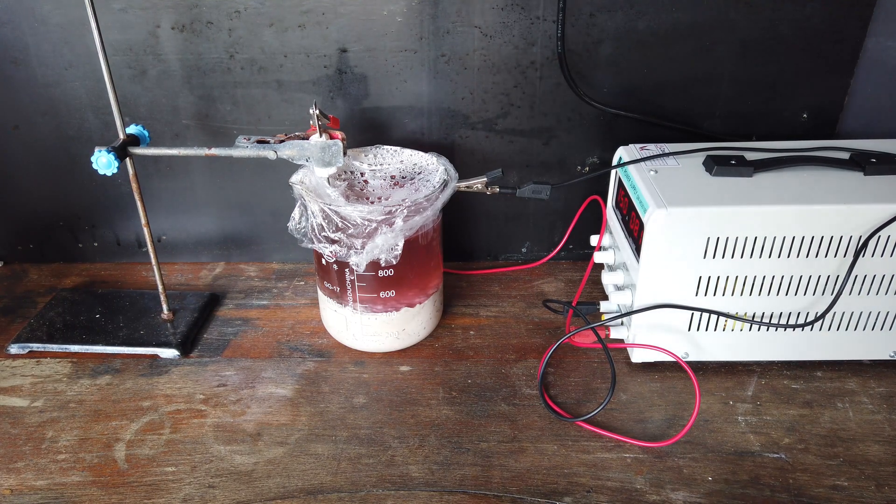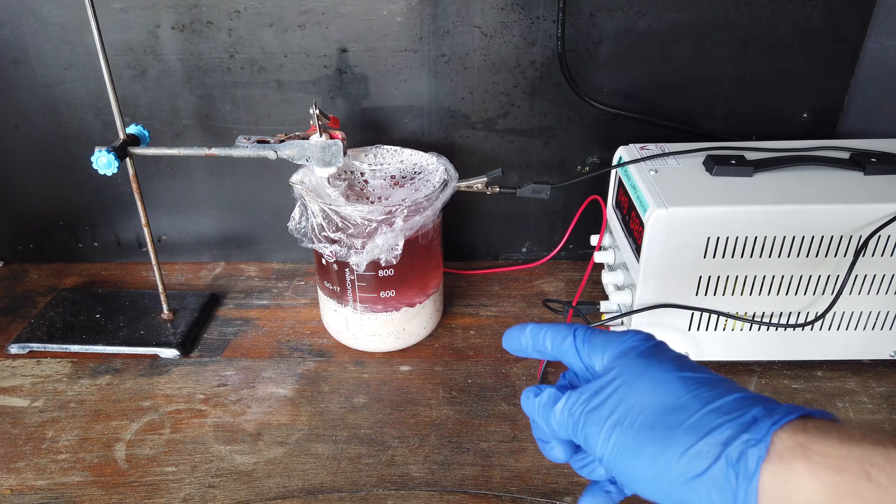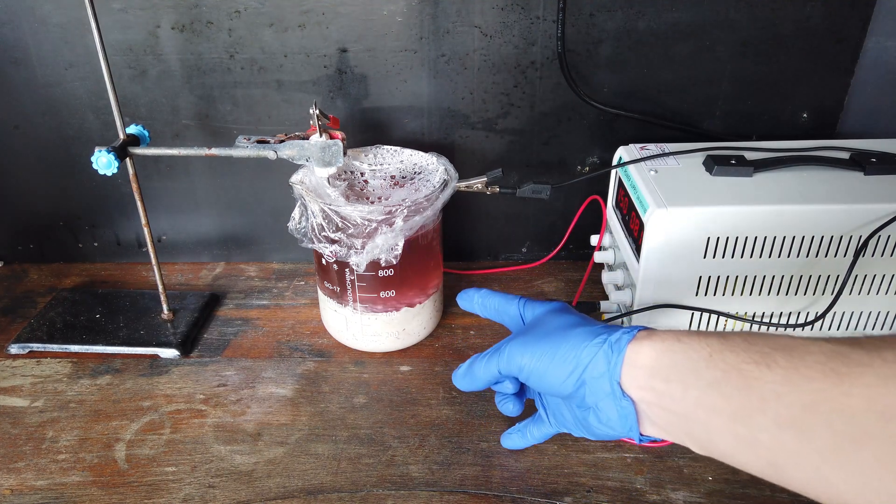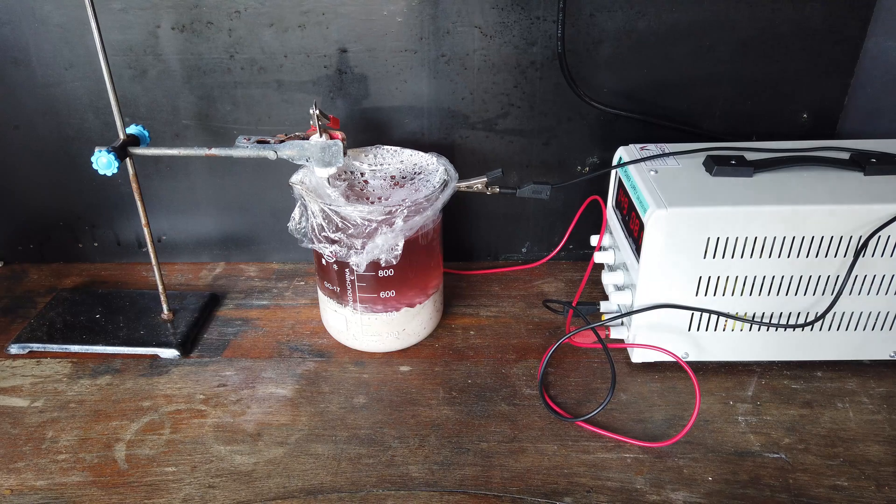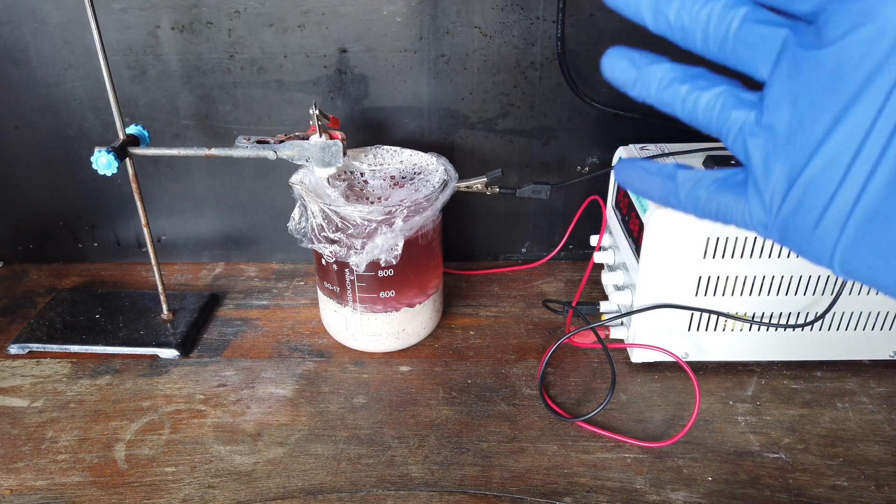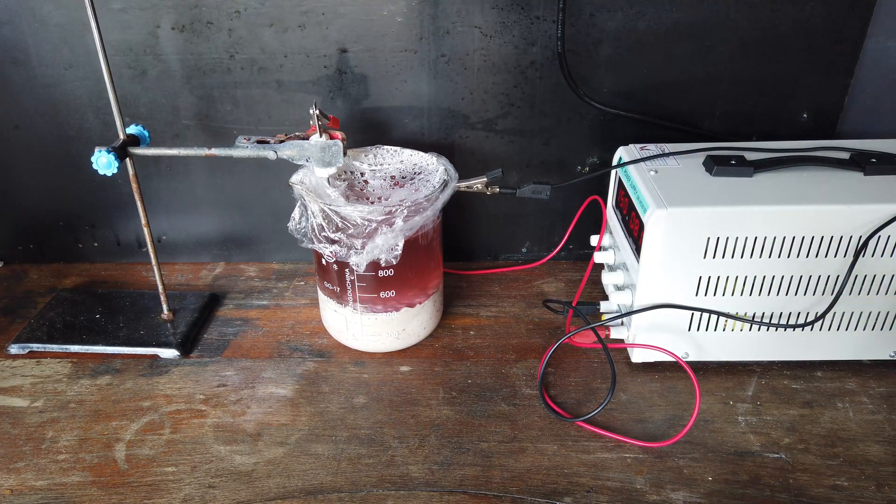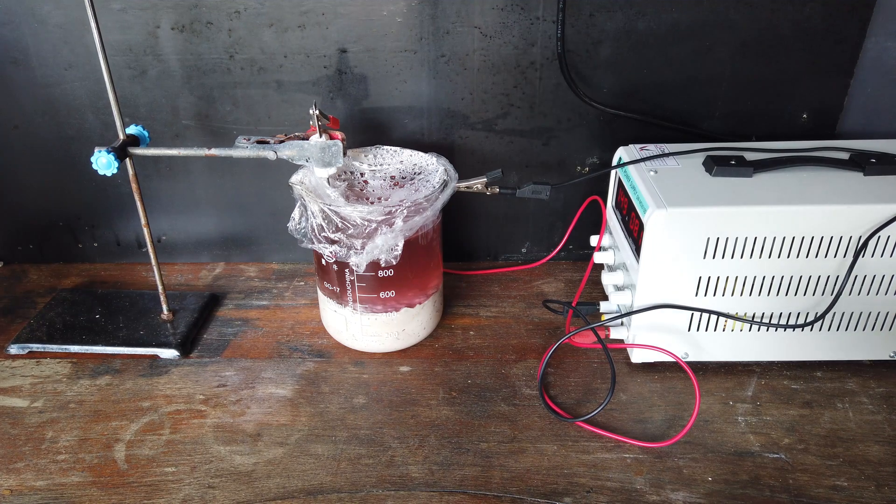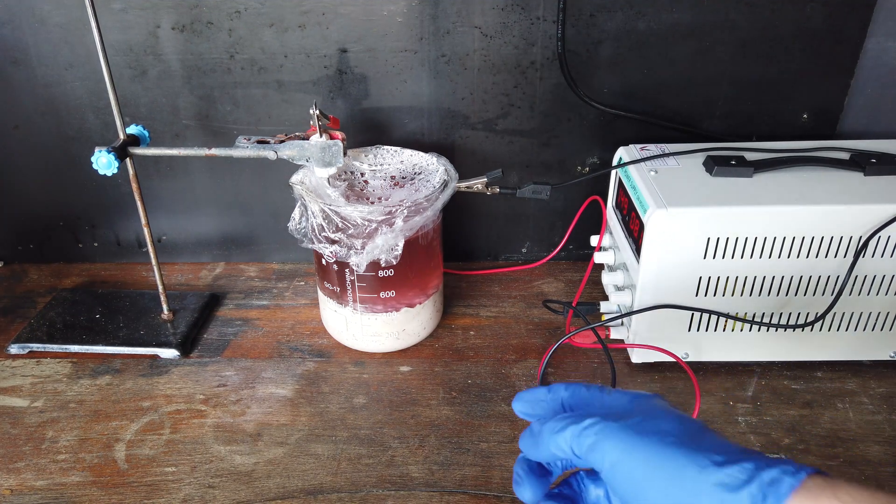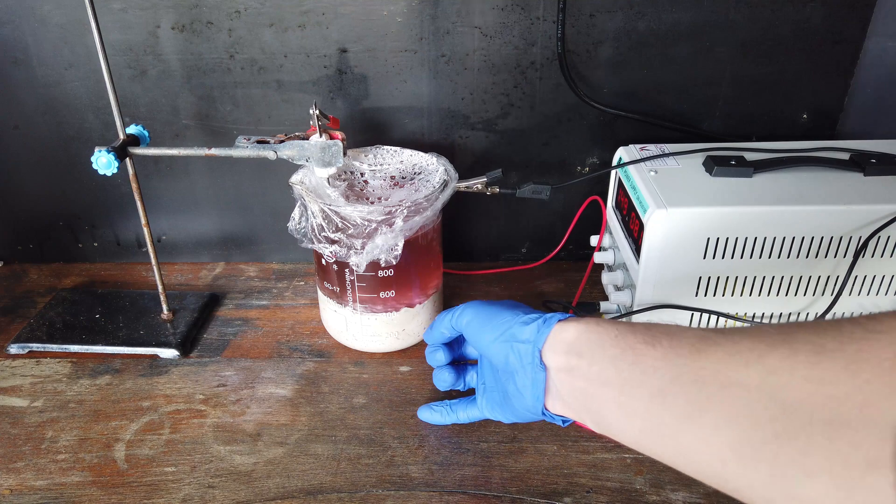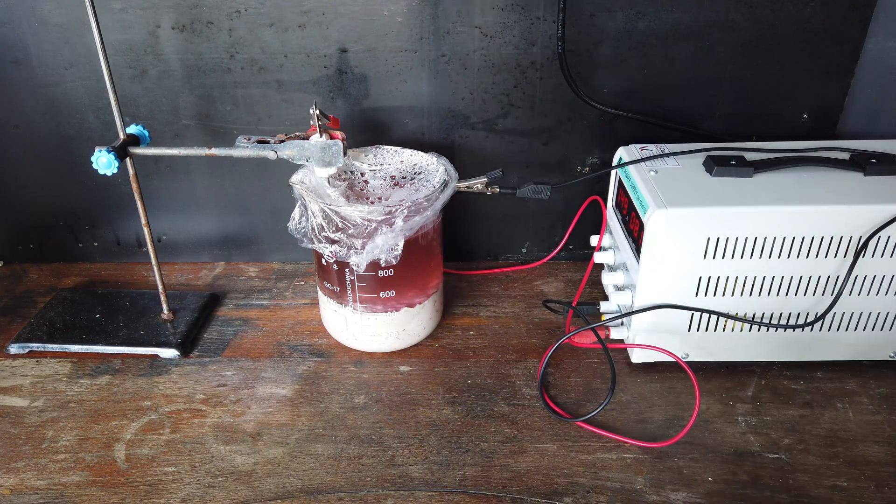From observing what happens, you can probably actually notice there the color of the solution in the beaker has gotten considerably lighter than when we started. So, we have successfully removed transition metals from solution and that has been happening faster than the transition metals have been dissolving in from the hydroxide precipitate.